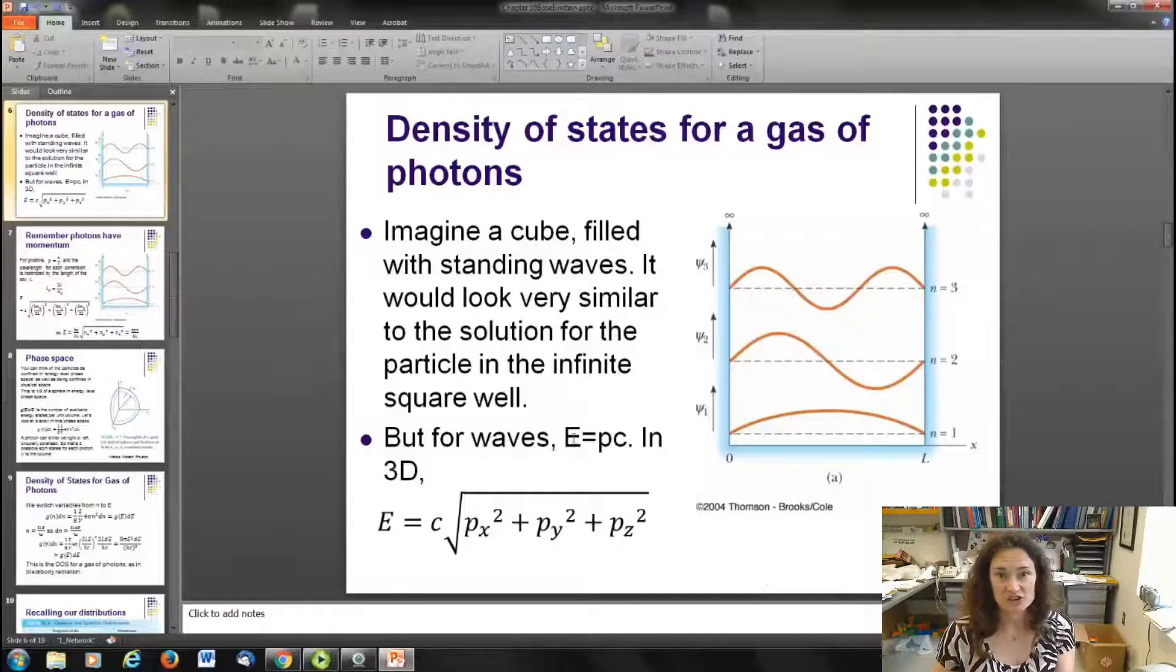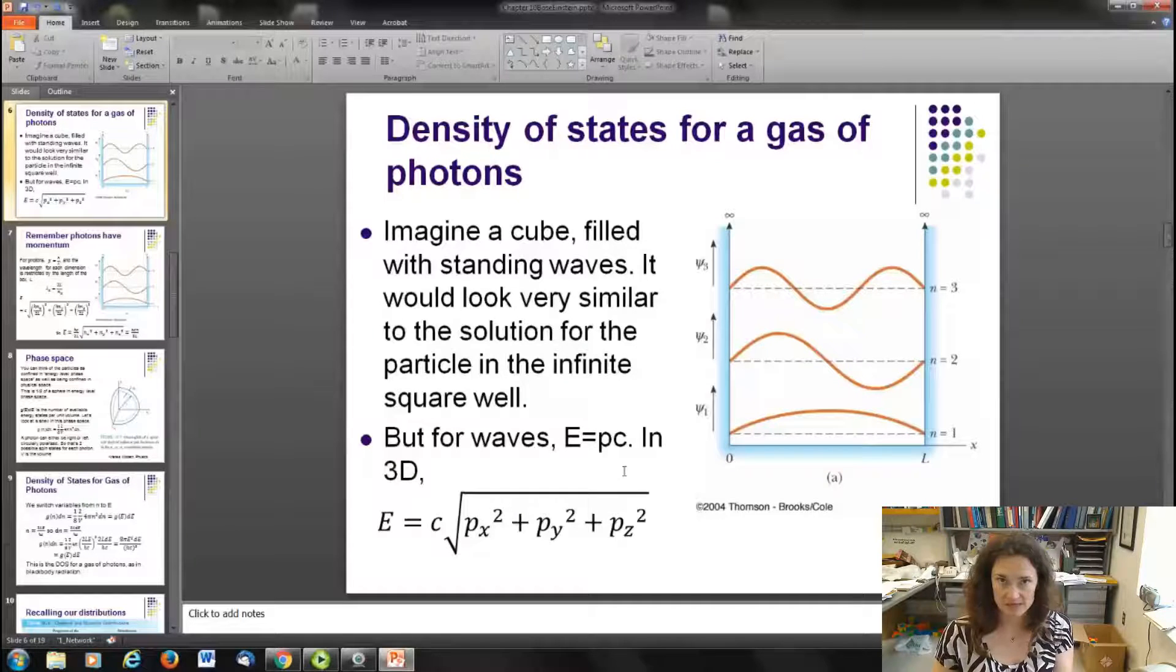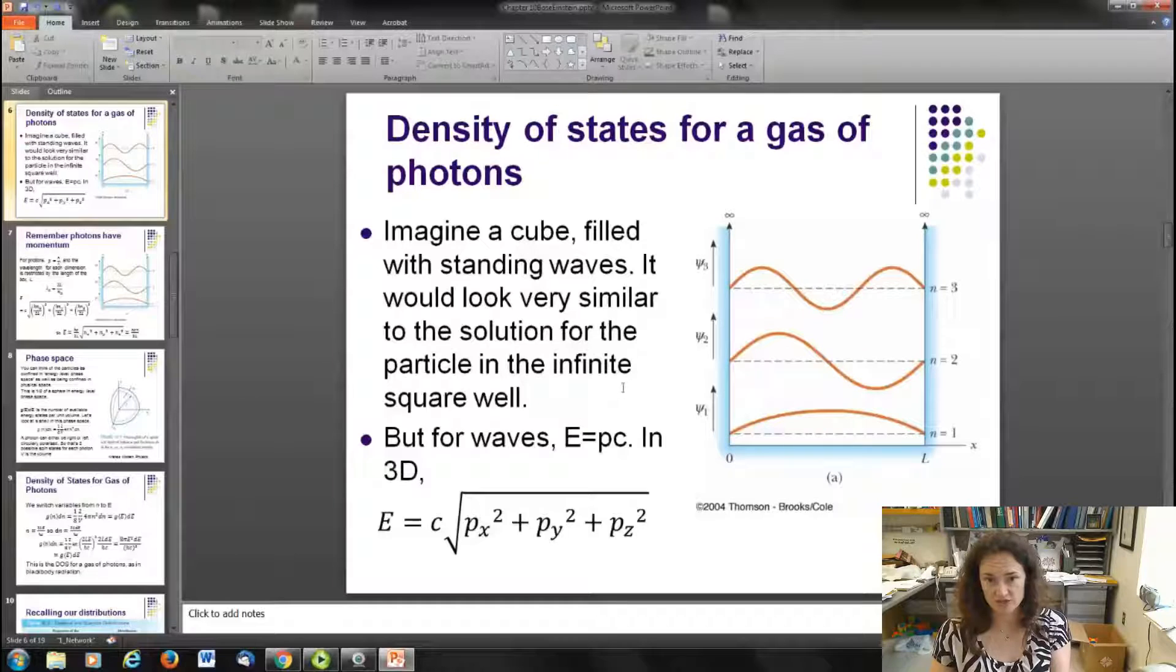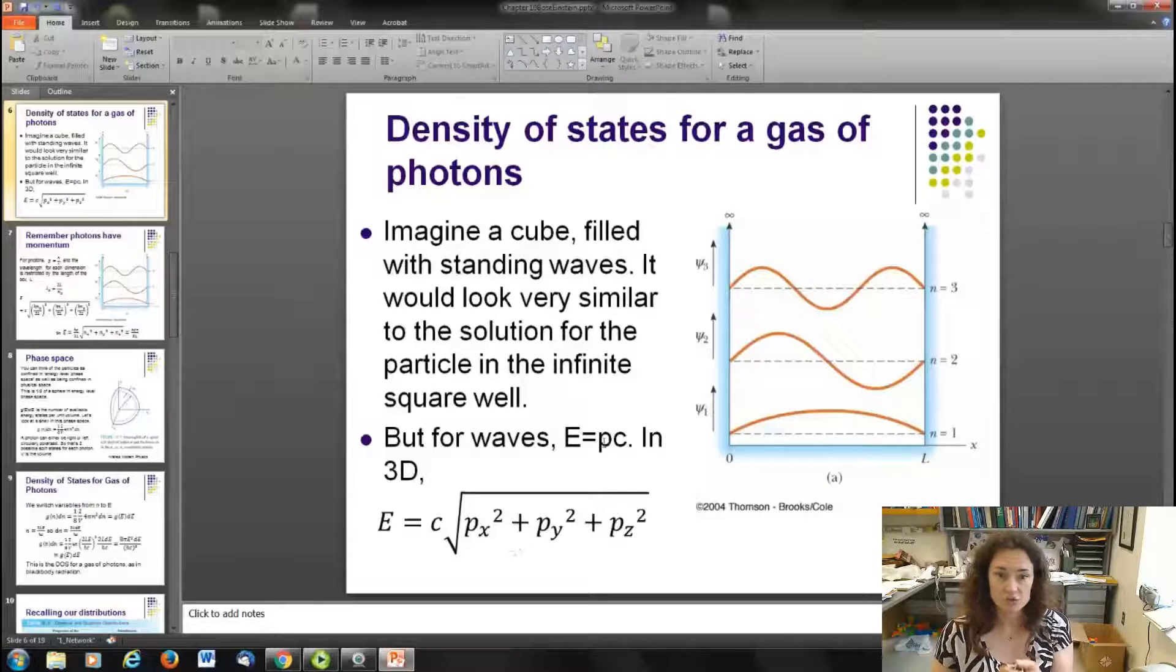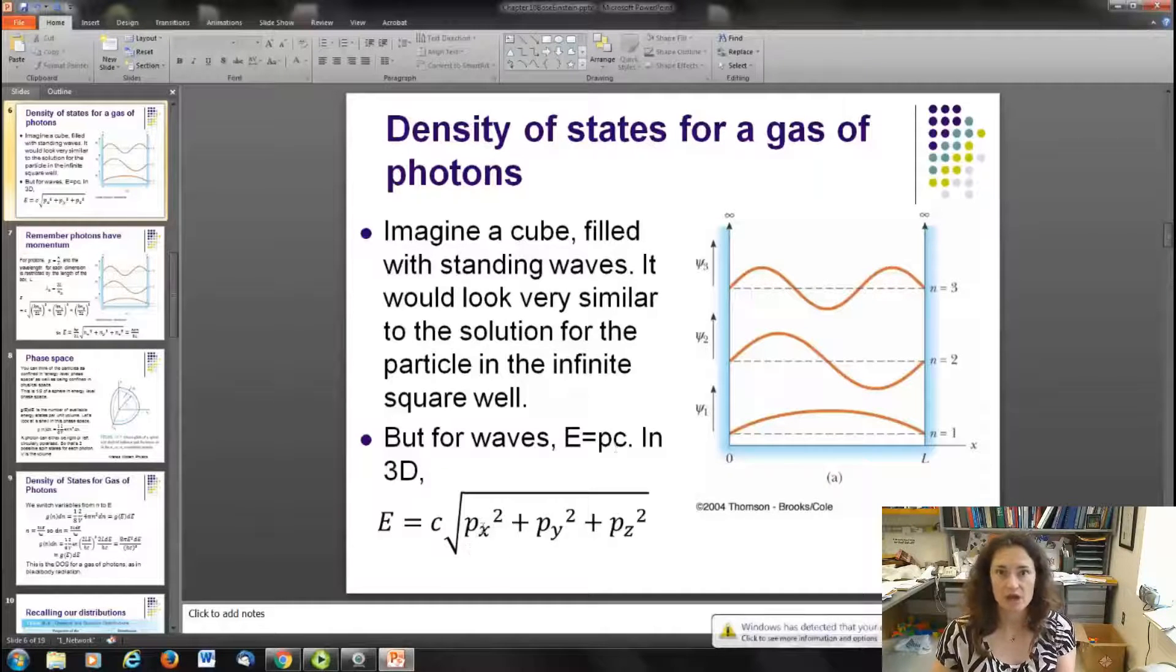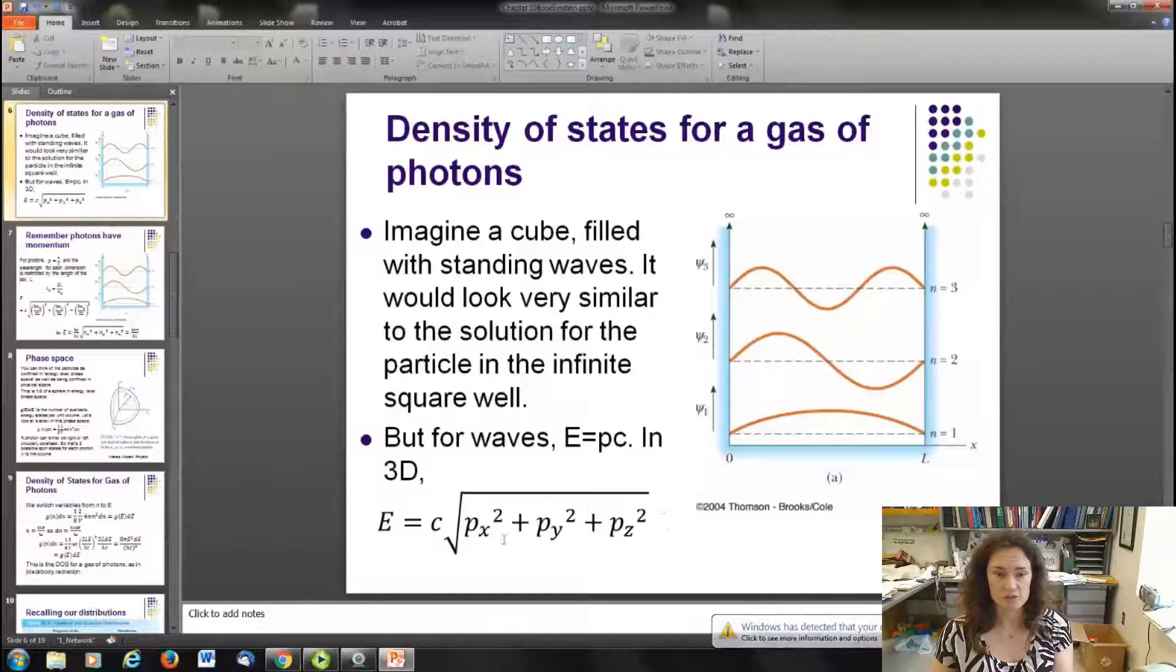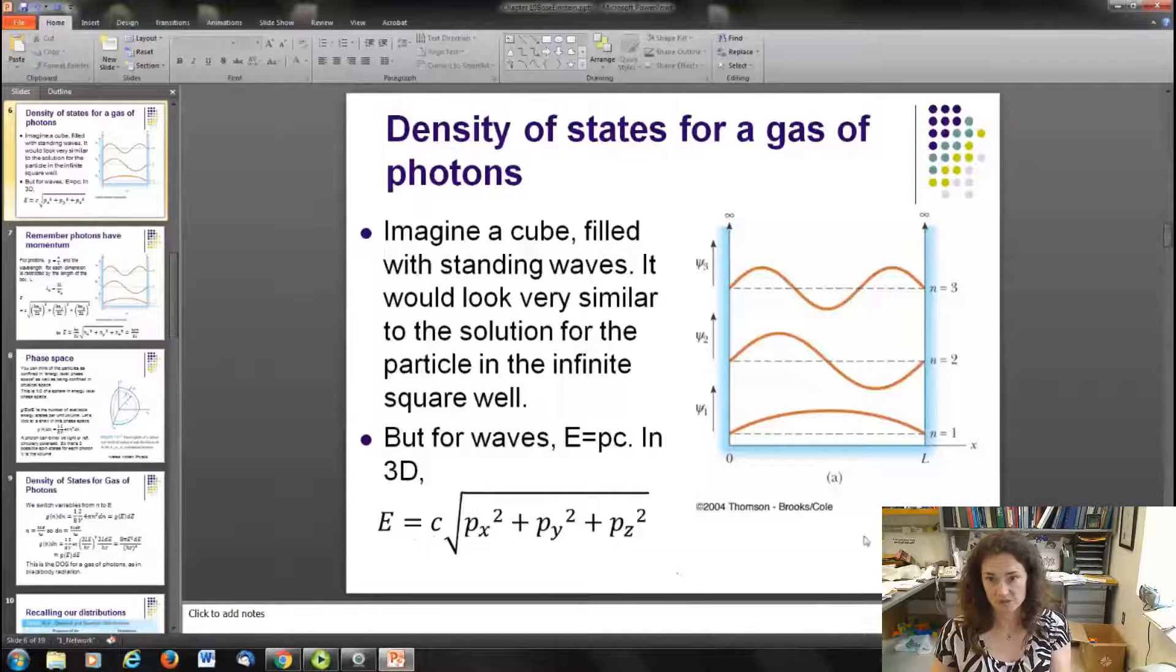Now for waves, the energy of the wave is equal to pc. This is hc/λ. E is equal to hc/λ, where p is the momentum of the wave, which is h/λ. Now, we have a 3D problem, so we've got momenta in the x, y, and z directions. So our total momentum, p, is the square root of the sum of the squares of the momenta: p = c√(px² + py² + pz²).